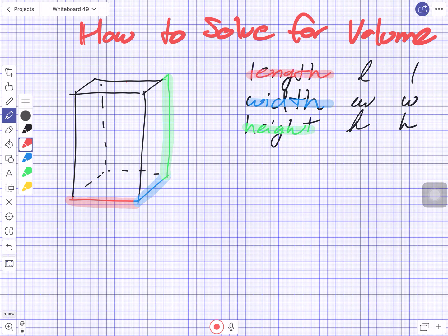A lot of times they'll ask us to label it, and that's where writing just one letter comes in really handy. I'll call this the l, this the w, and this the h. So the formula is: the volume, using the letter V, equals length times width times height.